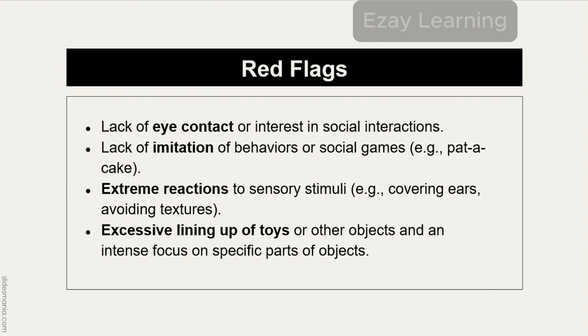We discussed that the core deficits of autism are social communication, social interaction, and repetitive restricted interests or activities. Lack of eye contact is a deficit of social communication or interaction. If there is lack of eye contact, it needs to be assessed. Similarly, lack of imitation of behaviors or social games is also a red flag.